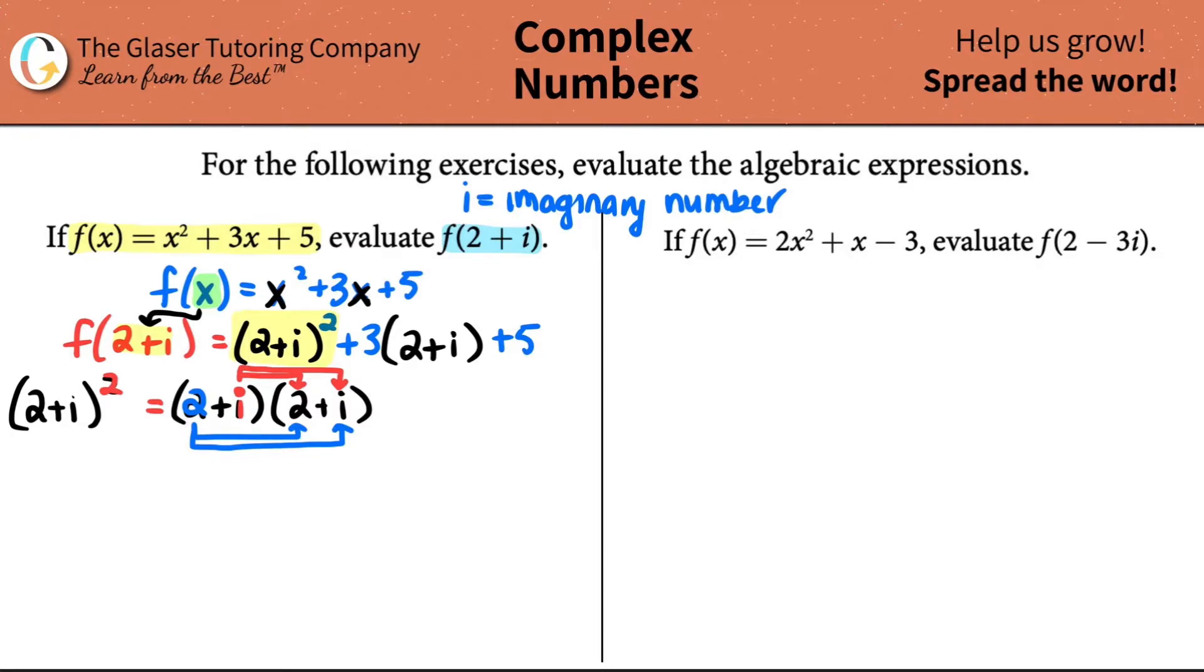So I'll color code this. 2 times 2 is 4. So that takes care of the first one. But now we gotta be fair. 2 times i is a 2i. So this would be plus 2i. Now comes the red guys. i times 2 is a 2i. And it's positive. So plus 2i. And then i times i is an i squared. Let's clean it up. There should be a squared here. Let's clean this up. These are like variables, I guess. They both just have one i. So I can say that this equals 4 plus 4i plus i squared.